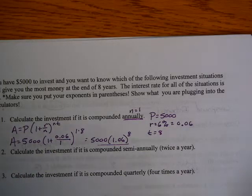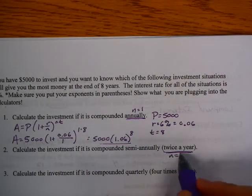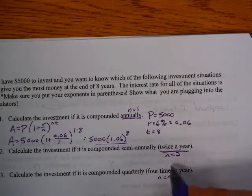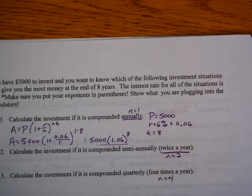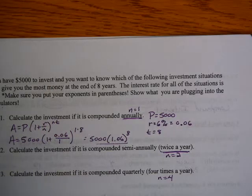So good luck. It shouldn't be too bad. This one continues. It's the same thing as the table. You're doing n equals 2, because it's twice a year. n equals 4, because it's 4 times a year. 12, 365. And you have to re-substitute everything into your formula. Good luck. I hope that made sense.